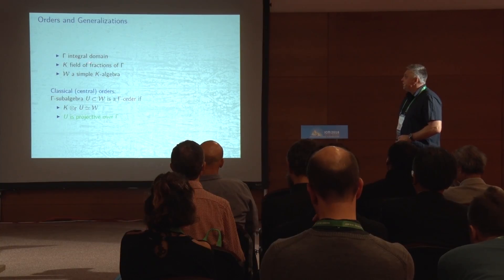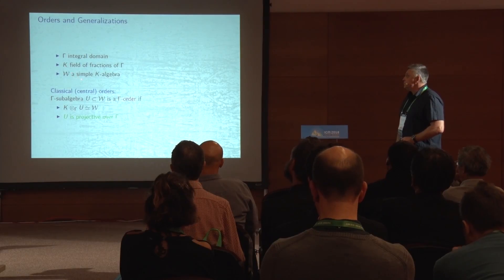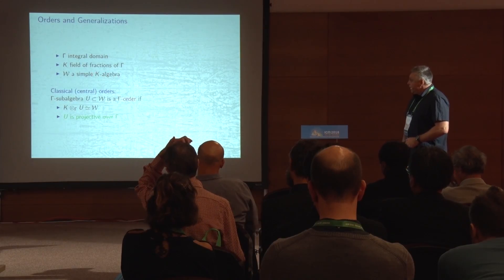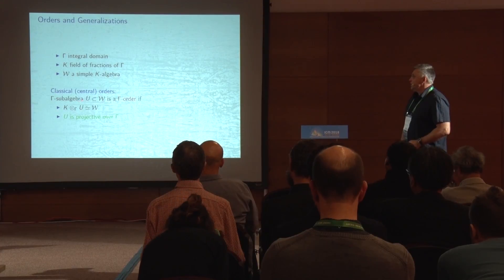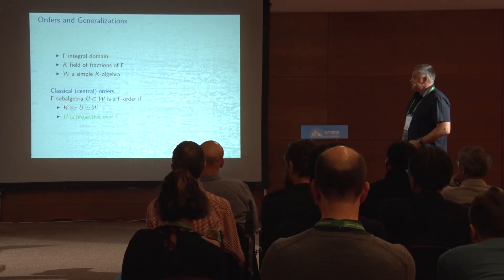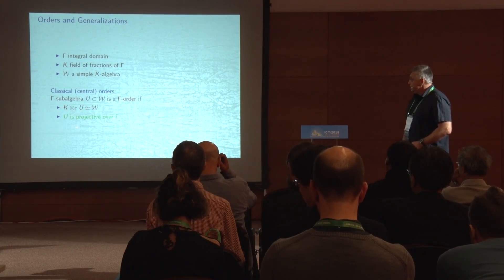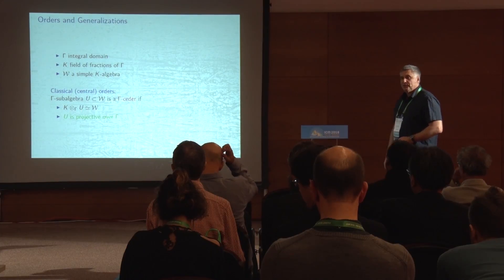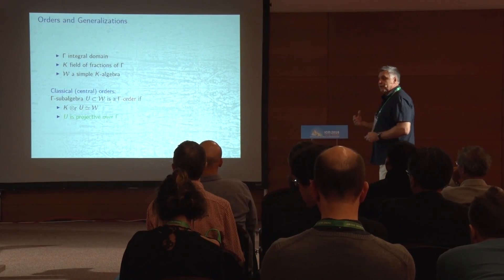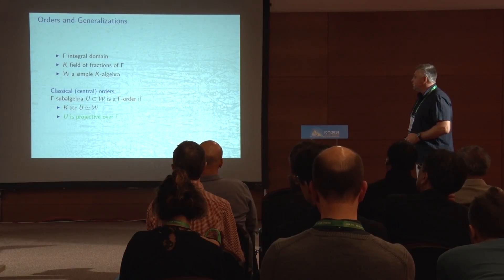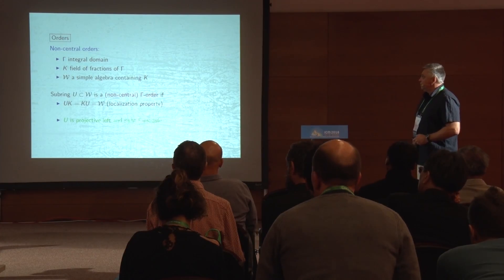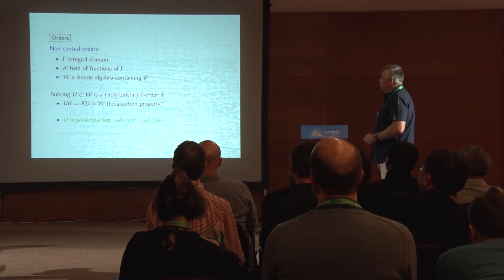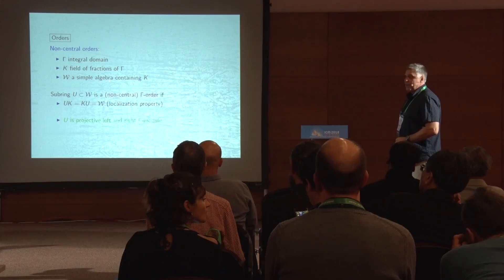To briefly recall what an order is: we have an integral domain gamma and a field of fractions k, and some simple k-algebra W — meaning W is k-central. An order over gamma is a gamma sub-algebra in W such that if we extend the scalars to k we get the whole W, with the extra requirement that U is a projective gamma-module. That's one version of the classical order. We are interested in non-central orders, where W need not be k-central.